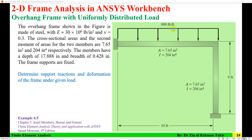Based on that area and elasticity, the members have a depth of 17.88 inches and a breadth of 0.42 inches, assuming a square cross-section — which yields some unrealistic dimensions. The frame is fixed at both supports, and there is a UDL of 800 pounds per foot acting on top. The required outputs are support reactions and deformation of the frame under the given loading.